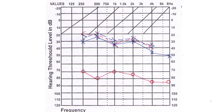Similarly, in the above audiogram, bone conduction masking should be carried out at 250 Hz, 500 Hz, 1 kilohertz, 2 kilohertz, and 4 kilohertz, as the right ear air conduction thresholds at the above frequencies exceeds 15 dB when compared to the right ear bone conduction threshold — that is the test ear — and in the left ear, BC masking is not warranted.